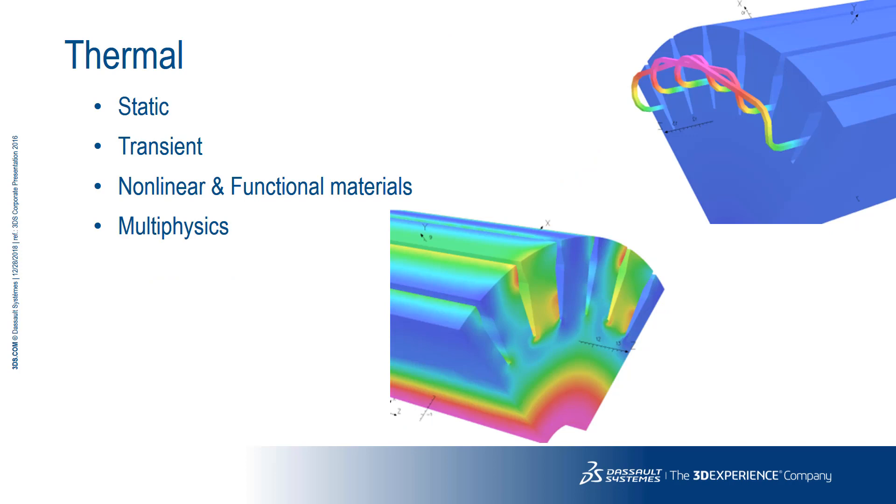Opera's thermal solver can be used to calculate thermal distributions on a static or transient basis. Opera can automatically pass results between the thermal, electromagnetic, and structural solvers. So we can use temperature-dependent materials and account for thermal strains.